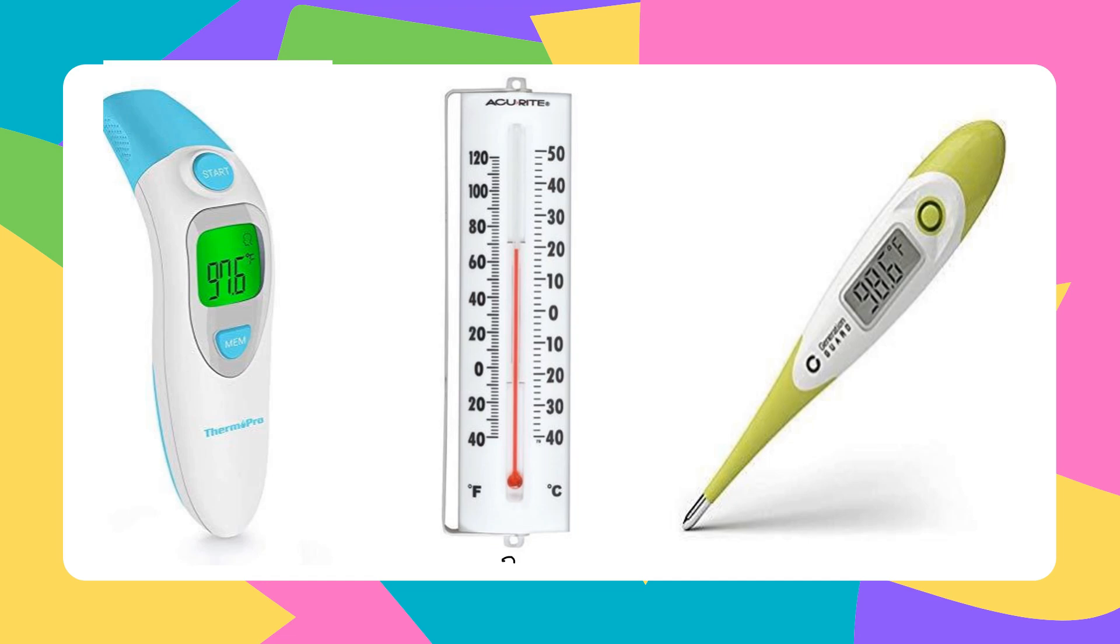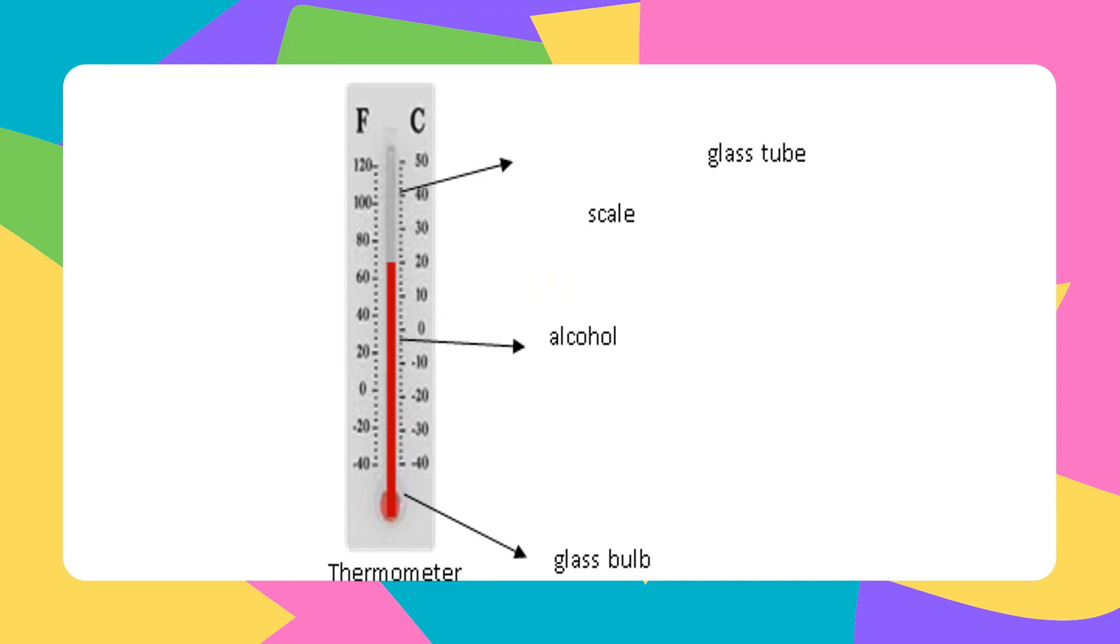Here are the examples of thermometer na ginagamit natin to find the temperature of a body. Ito namang number 2, ito yung thermometer para sa room or room temperature. Makikita natin yung unit. The left side, ito yung degrees Fahrenheit, and the right side, ito yung degrees Celsius. Karaniwang ginagamit natin ang degrees Celsius, kaya dito tayo titingin sa may right side. Itong example natin ng thermometer or room thermometer and its parts. Meron tayong glass bulb and then the alcohol. Yung alcohol yung nag-red para makita natin kung saan nagsatapat, kung saan ma-measure natin ang temperature. Yung mga numbers na yan na nakikita nyo is the scale. And also, ang thermometer ay merong glass tube.